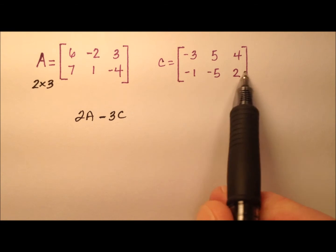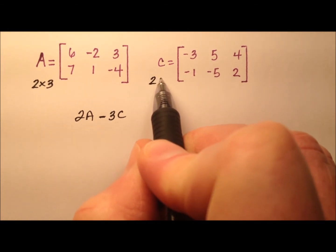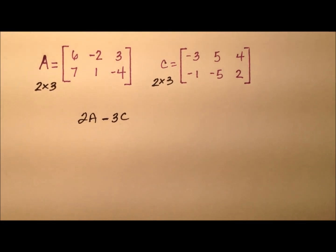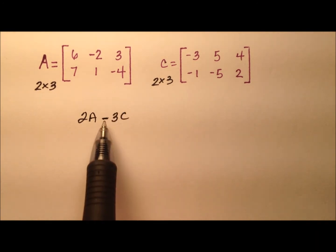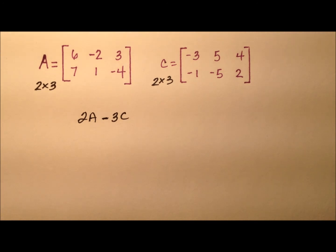And matrix C looks like it also has 2 rows and 3 columns, so these 2 matrices do have the same dimensions, which means they will have corresponding entries, which means that this subtraction ultimately will be defined.